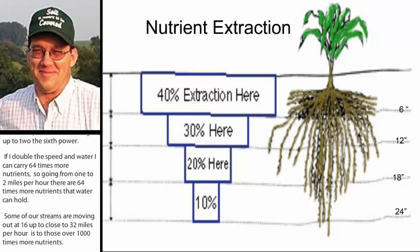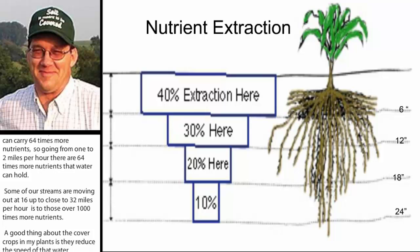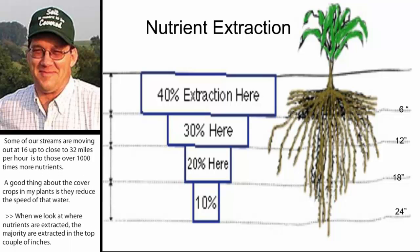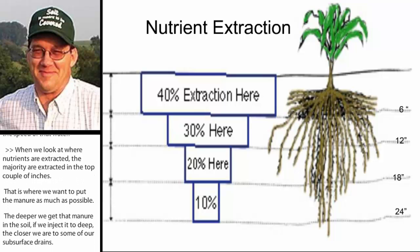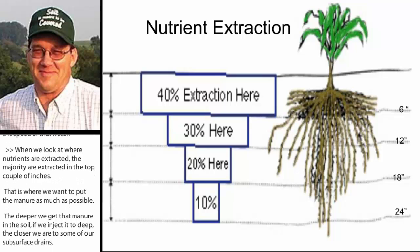Looking at where nutrients are extracted — the majority are extracted in the top couple of inches. That's where we want to put the manure as much as possible. The deeper we get that manure in the soil — if we inject it too deep — the closer we are to subsurface drains. Over 40% of nutrient uptake, at least on corn, is going to occur within that top six inches. So we want to think about root structure and where that manure needs to be applied.